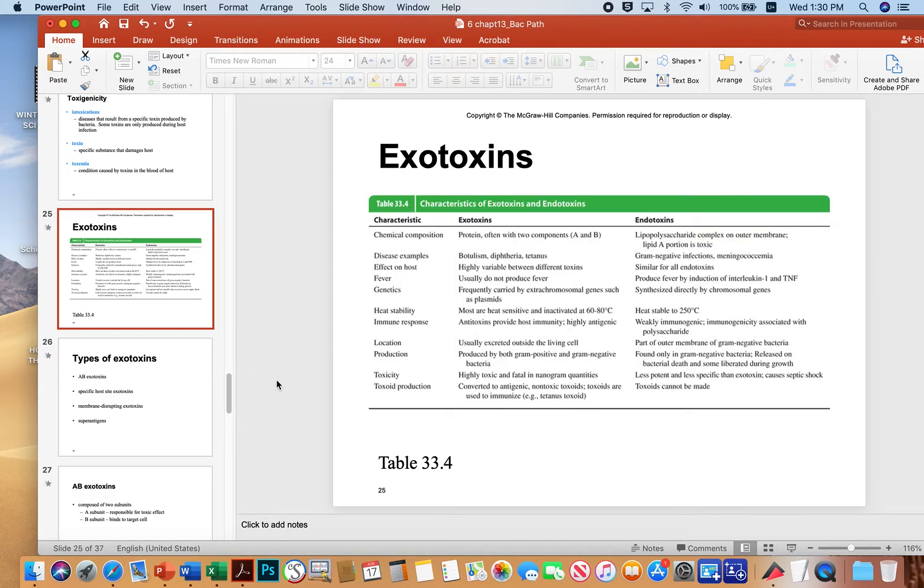This is a table comparing exotoxins and endotoxins. So exotoxins are protein toxins. Typically, a microbe will actually preform the proteins in its cytoplasm and then pump them out into the world usually. Whereas endotoxins are a physical part of the bacterial membrane, as I've talked about already. And so that outer portion of the gram-negative outer membrane is the, in which the lipid A portion is contained is actually toxic.